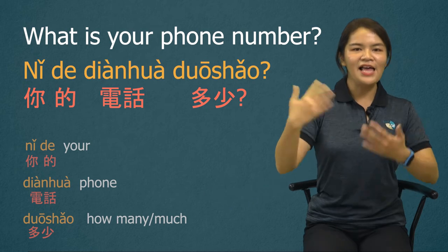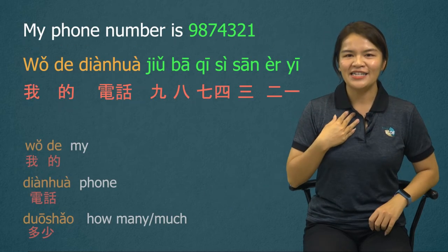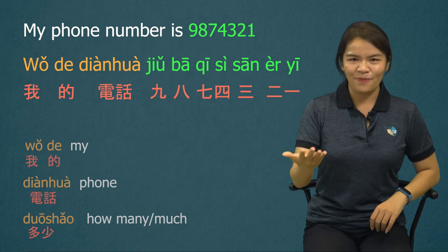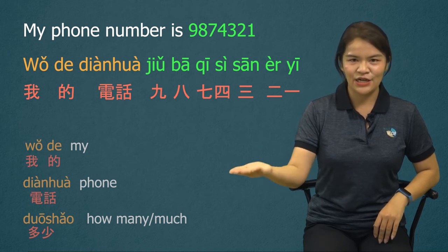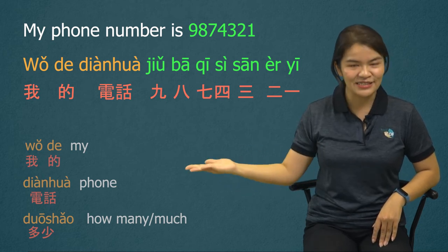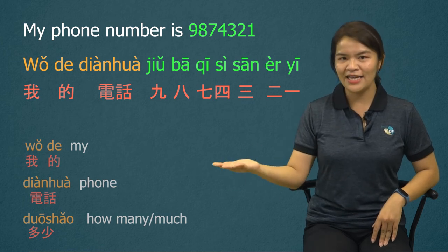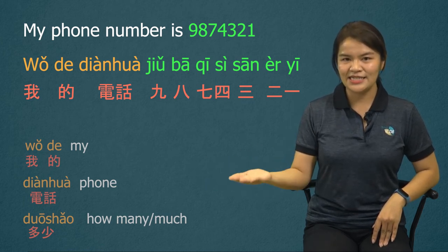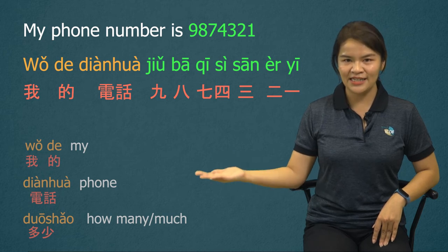And we answer: 我的电话 九八七 四三二一. My number is 我的电话 九八七 四三二一.